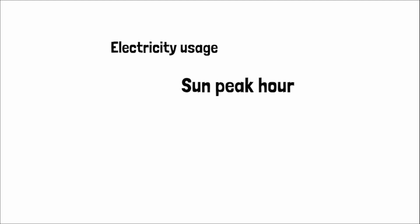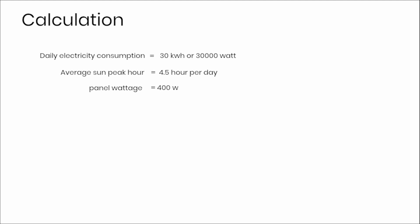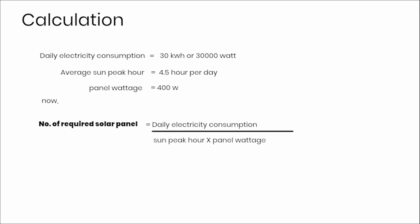Now that we have our three variables, we can calculate how many solar panels it takes to power a house. Assume daily electricity consumption is 30 kilowatt hours, which equals 30,000 watt hours, taking average peak sun hours per day and average panel wattage as 400 watts. The total number of panels is calculated by dividing daily electrical consumption by peak sun hours and average panel wattage, which comes to 16.66 panels. If we round up, it takes 17 solar panels to power the average household and meet the goal of 100% electricity offset.